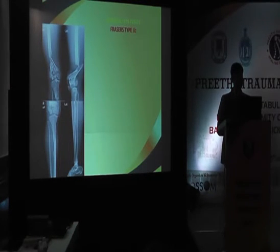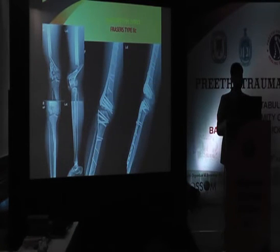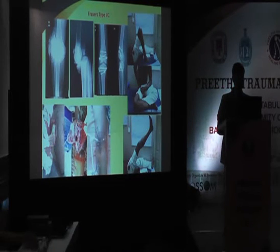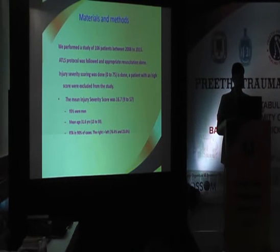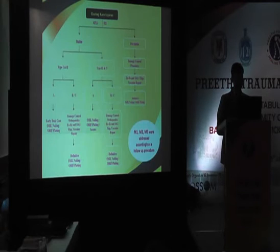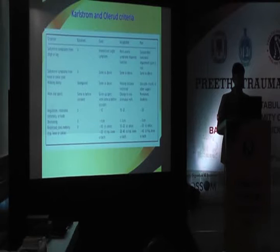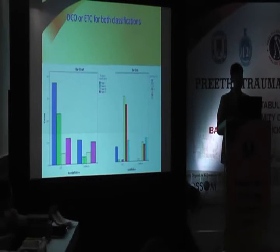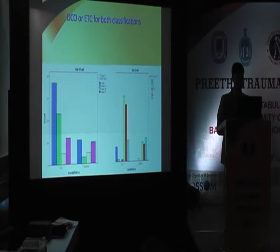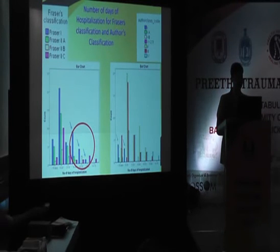Another complex case was author's type 4P M1 — primary fixation was done and this patient is doing excellent. This is our case series of 106 cases and this is the protocol we have followed and are continuing to follow. The paper has been submitted for publication. The Karlstrom-Ollerit criteria are being used for assessing functional outcome. Using the author's classification, we can clearly identify how many patients undergo damage control versus early total care, and the number of days of hospitalization is well defined.